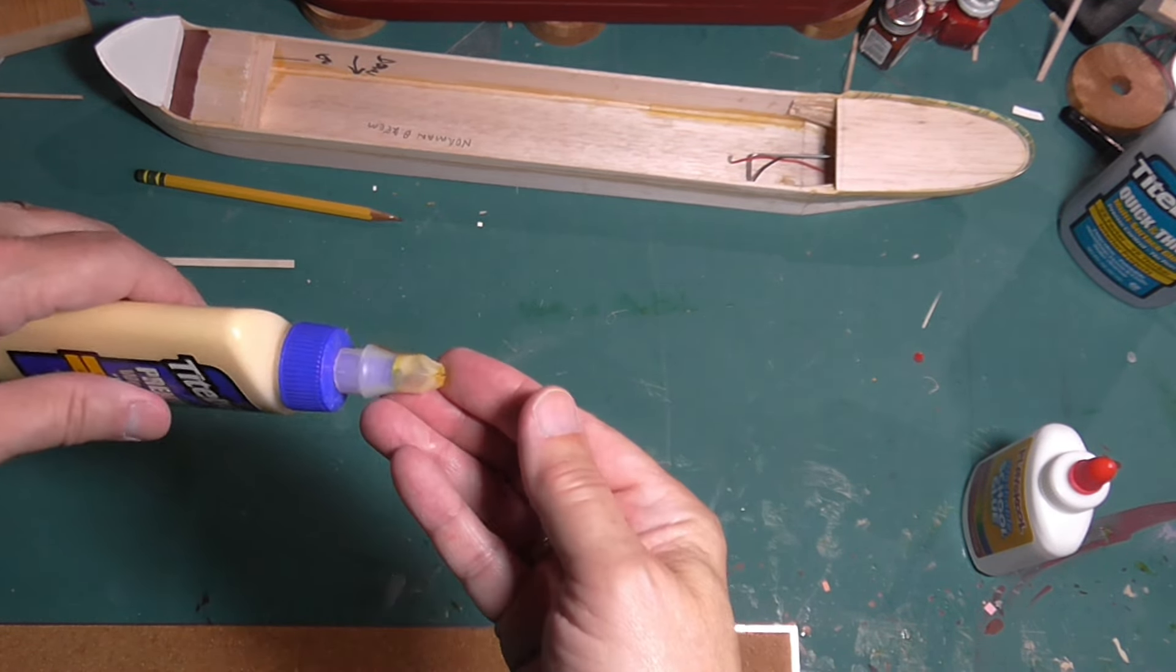Next after those have dried, right along the arm you're going to put some glue. Take a fluke and glue it on - very simple. Do that three more times and you're going to have two anchors.